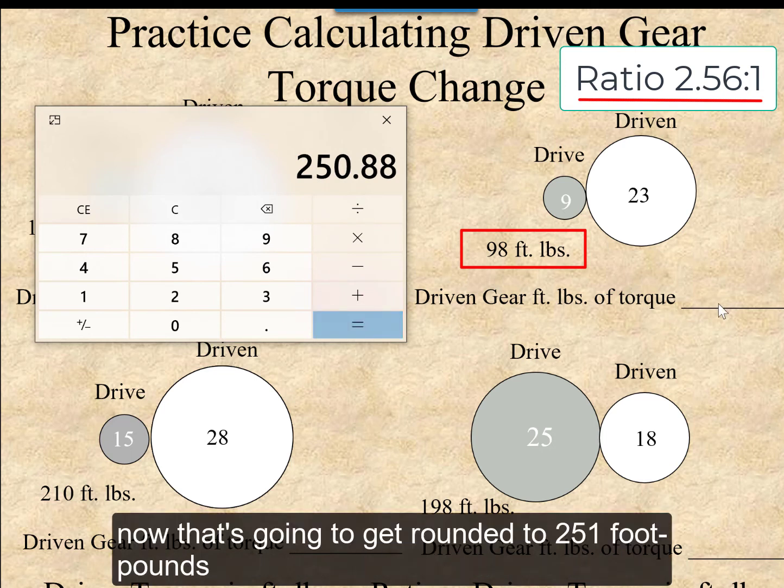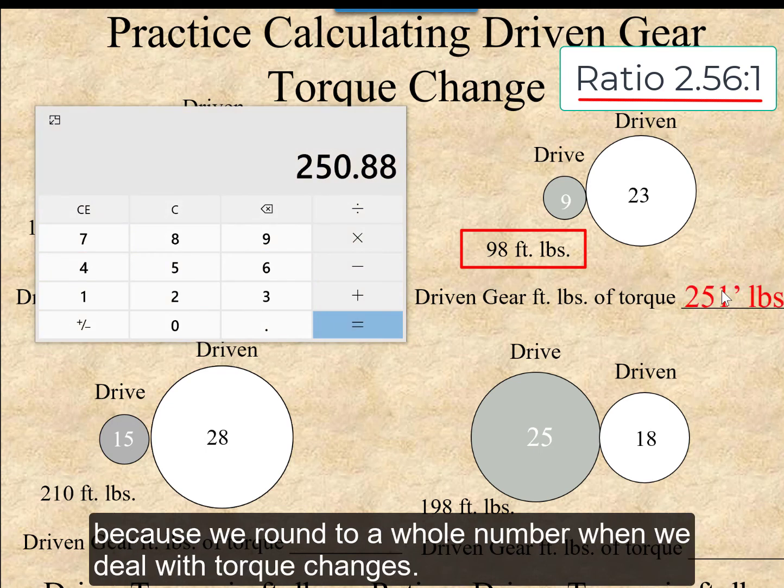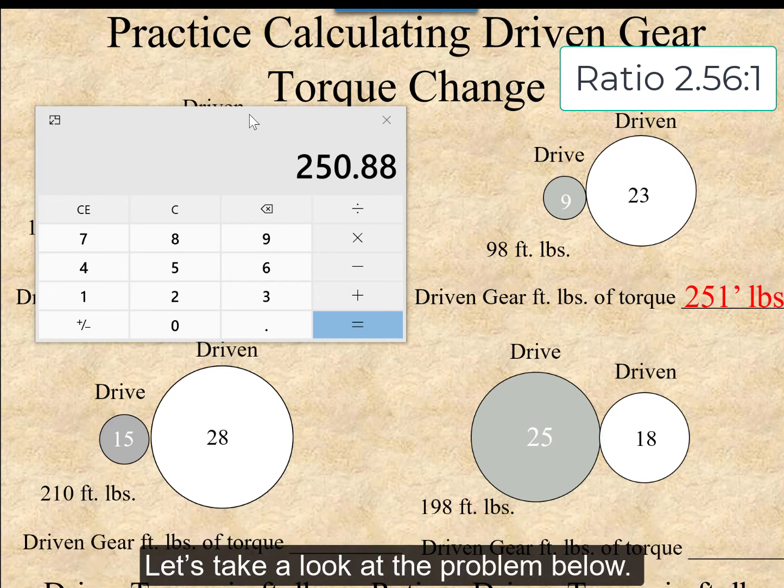Now that's going to get rounded to 251 foot-pounds because we round to a whole number when we deal with torque changes. Let's take a look at the problem below.